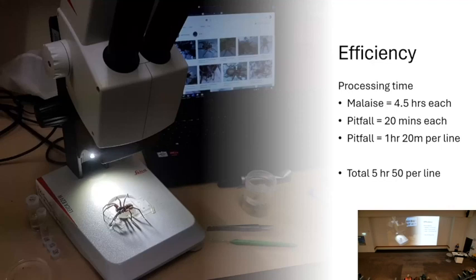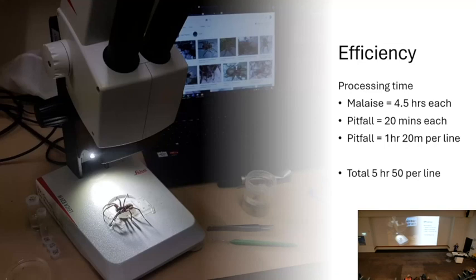People often balk at the idea of having to process samples — you catch a lot of bugs and then you've got to sit in the lab doing all this bug picking. It's a real limitation. We tracked how long everything took: the malaise trap took about four and a half hours to sort, and each pitfall trap was about 20 minutes — so a whole pitfall line is about an hour twenty. A whole line of one malaise trap and five pitfalls was basically about five hours fifty, which I actually don't think is that bad.